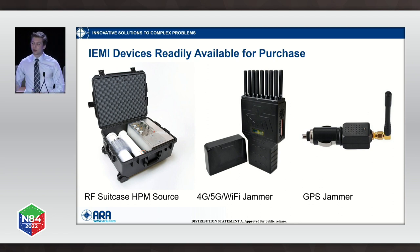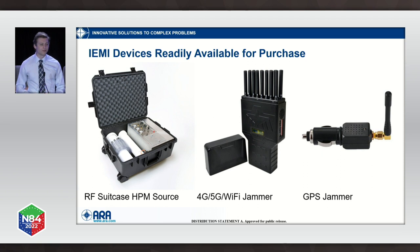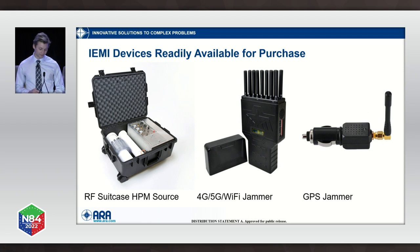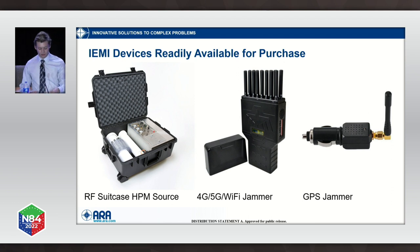The last case is an instance of revenge: a man in the Netherlands was denied a bank loan, went online, learned how to make an EM disruptor, and was able to take out their IT system for a few hours before they tracked him down. What's scary is that none of the things I've described require you to be particularly tech-savvy — you can look online at how to build these things. And if you don't want to do that, you can just buy them. This suitcase HPM source is made by a company in Austin — it's designed for testing and scientific purposes. The other two devices I found on eBay, not too expensive, meant to jam cellular networks and GPS signals.